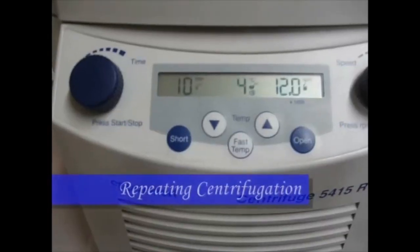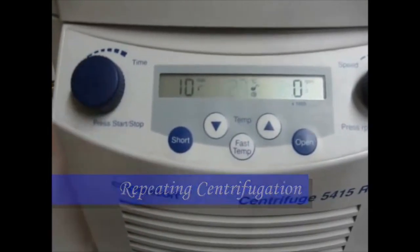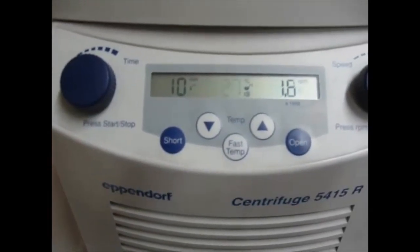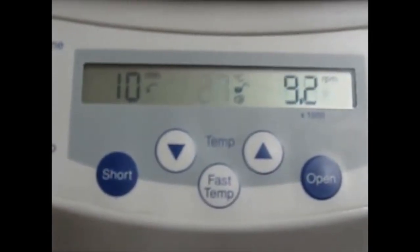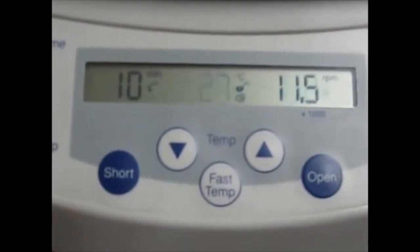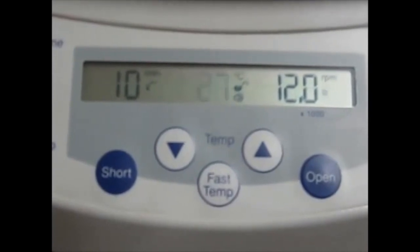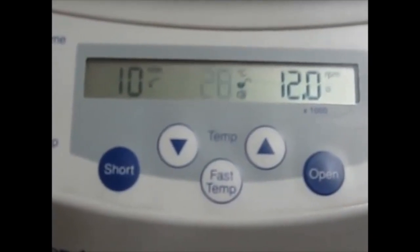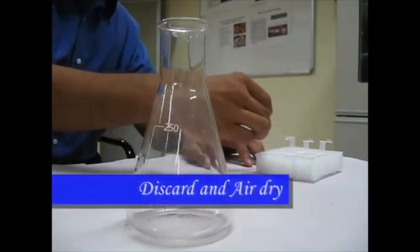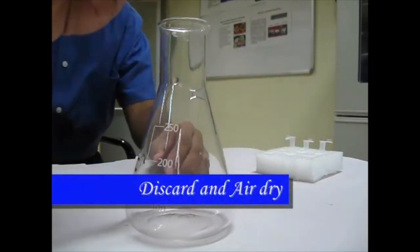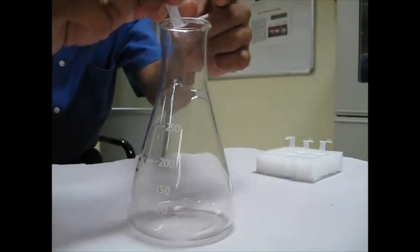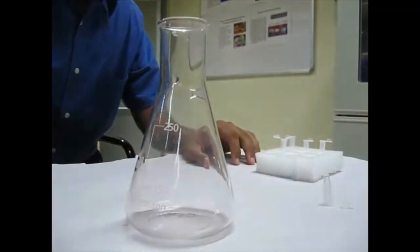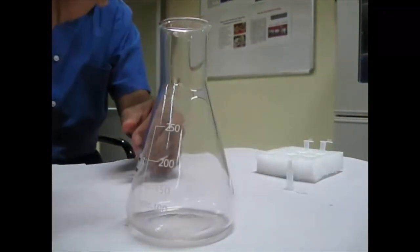After the incubation we have to give once more centrifugation at 12,000 rpm for 20 minutes maintaining 4 degree Celsius temperature. After centrifugation discard the aqueous layer and allow it to air dry for 5 to 10 minutes.